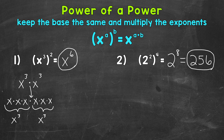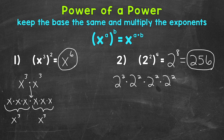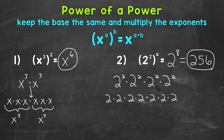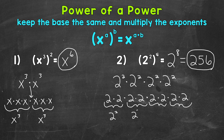Let's break that one down as well. 2 squared to the power of 4 means 2 squared times 2 squared times 2 squared times 2 squared. Breaking it down further: 2 squared means 2 times 2, and we have four of those — so 2 times 2, times 2 times 2, times 2 times 2, times 2 times 2. That gives us 2 to the power of 8. You can see how it works out when we multiply those exponents and keep the base the same.